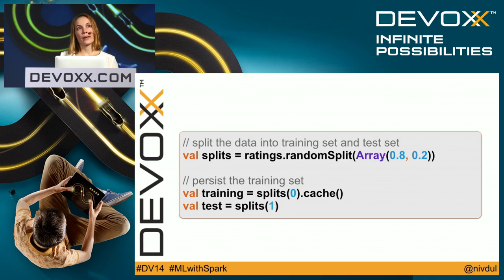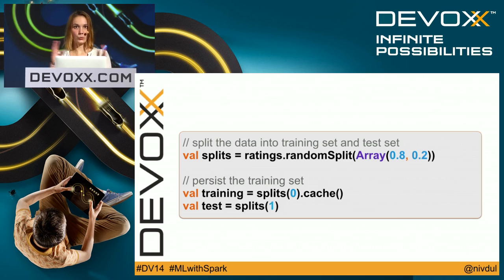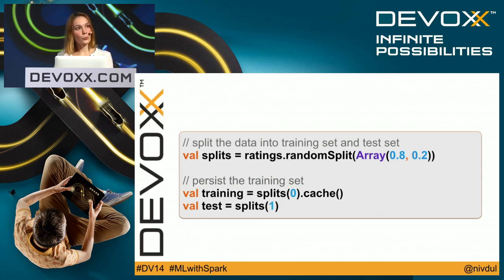You want to create a model from your data, but you also want to know if the model is good. So you need to validate it. A good practice in ML is to split your dataset into two: a training set and a test set. I split the dataset, and since I want to find the best possible model by iterating on my data, I use the cache method to persist the data in memory — leveraging Spark's in-memory processing.